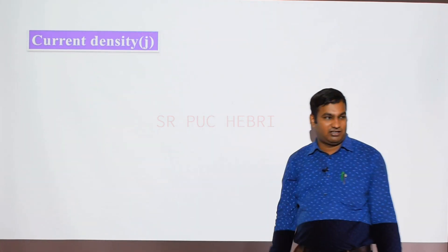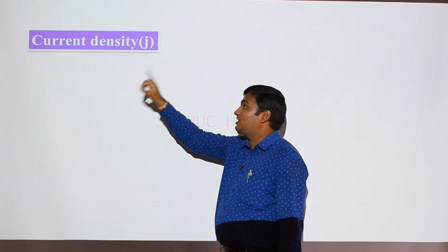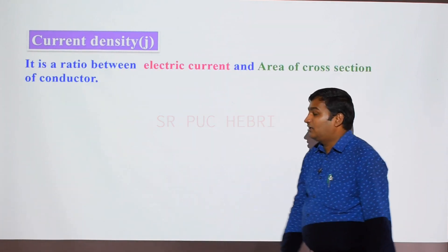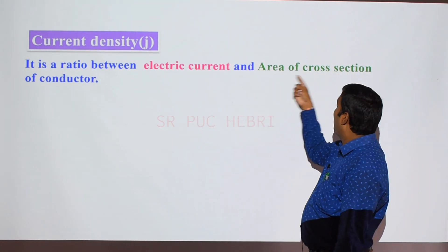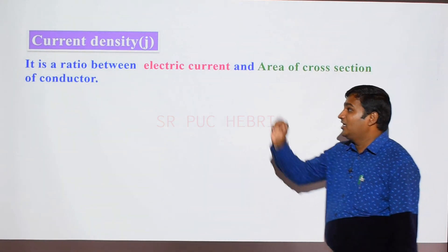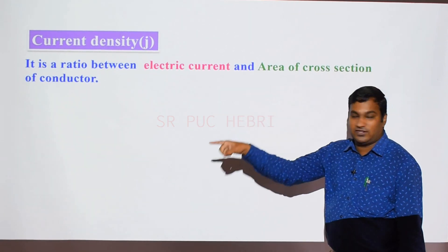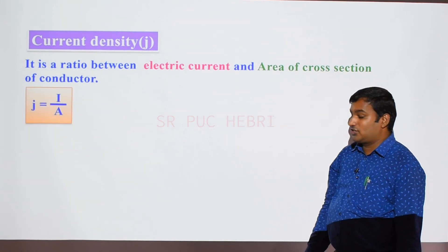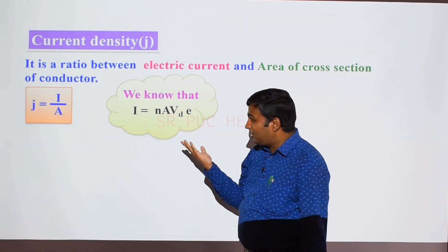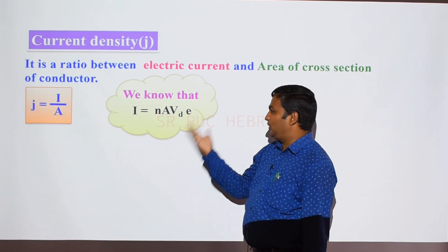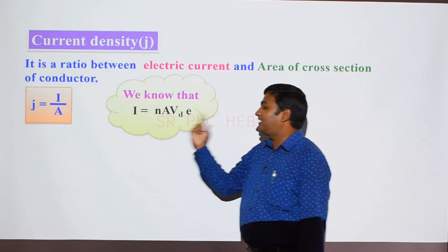The next important term in electric current is current density, denoted by the small letter j. Current density is the ratio between electric current and the area of cross section of the conductor. Mathematically, j is equal to I divided by A, where I is the electric current and A is the area of cross section. We also know that I equals N into A into Vd into e — the relationship between electric current and drift velocity.